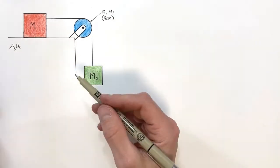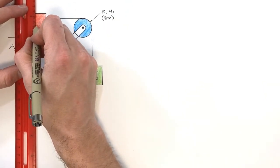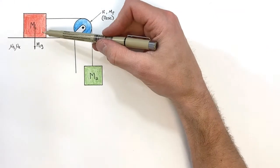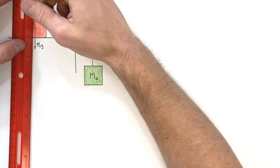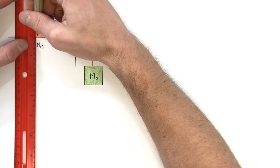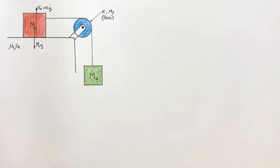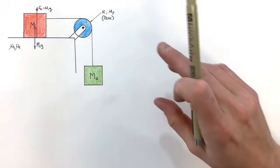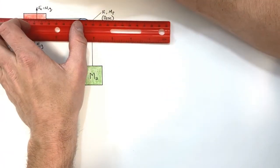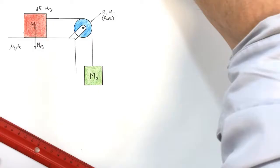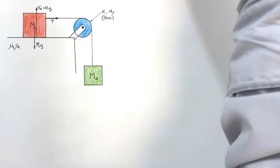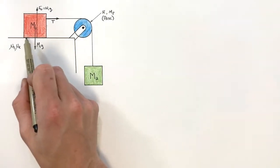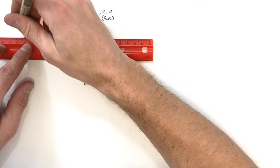Starting with the block on the surface: we know there's gravity acting downward on the block, and because it's on a level surface, there's a normal force upward equal in magnitude to the gravitational force. The string pulls this block to the right, and lastly there's a friction force. Since this block can only ever be pulled to the right, friction is always going to act to the left.